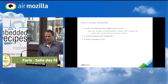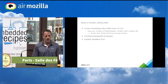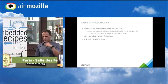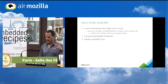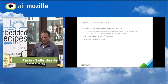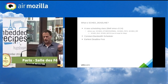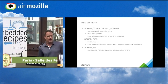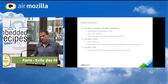So what is SCHED_DEADLINE? Well, it's a new scheduling class, along with the other scheduling classes like SCHED_OTHER or Normal — that's what the default is — SCHED_RR, SCHED_FIFO, and there are a few other things: SCHED_Idle and SCHED_Batch, but those I'm not going to talk about. It's implemented with the constant bandwidth scheduler and it's the earliest deadline first scheduler. I'll explain those on my way.